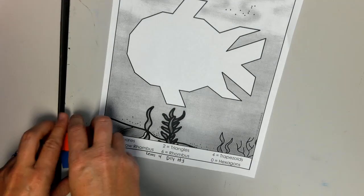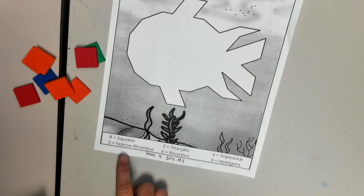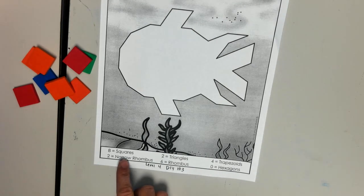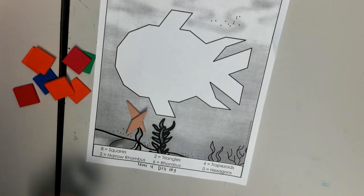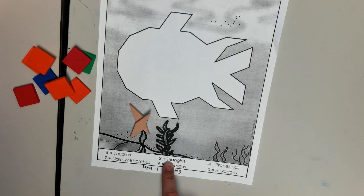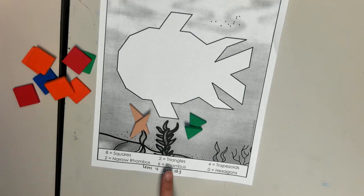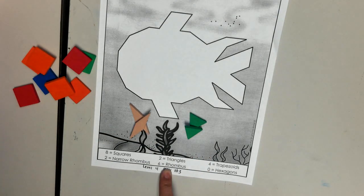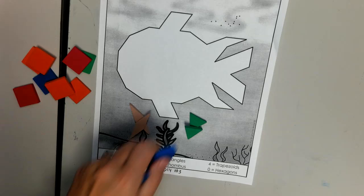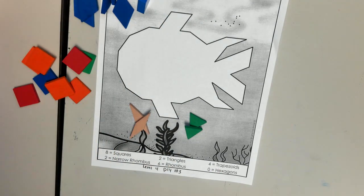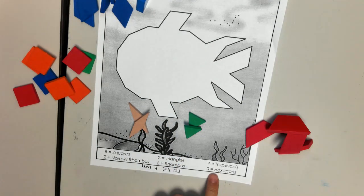I don't think it matters on the colors, just make sure you get the right number of each shape. You need 2 narrow rhombus, like this. You need 2 triangles, 6 of the blue rhombus, 4 trapezoids, and 0 hexagons.